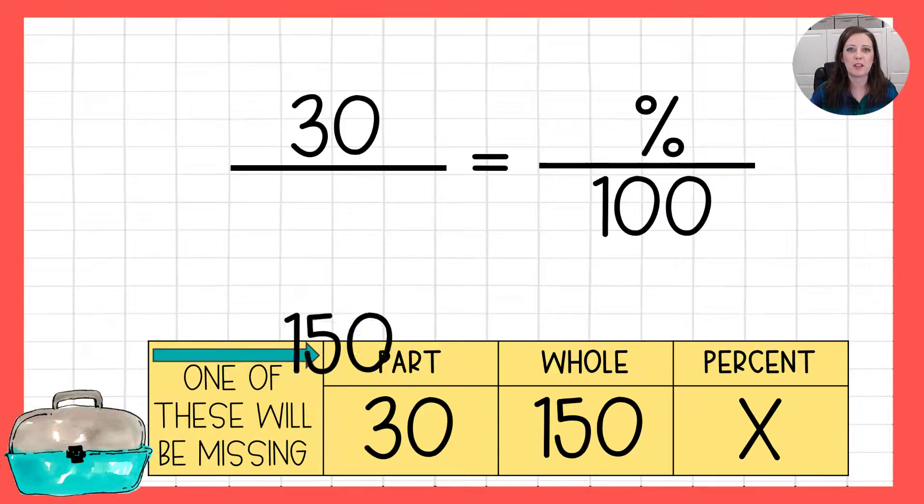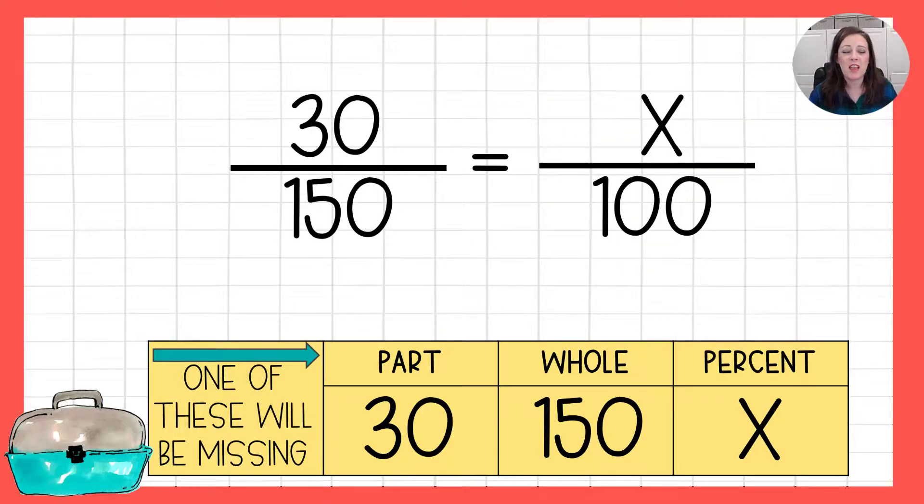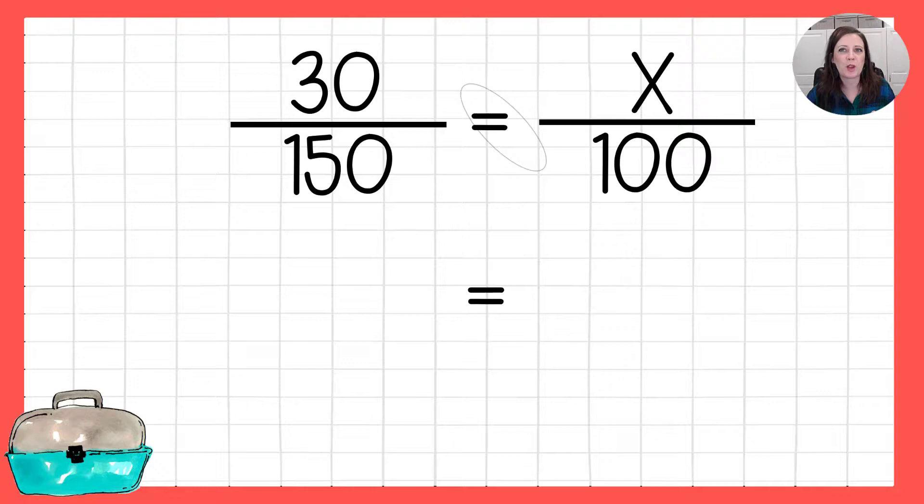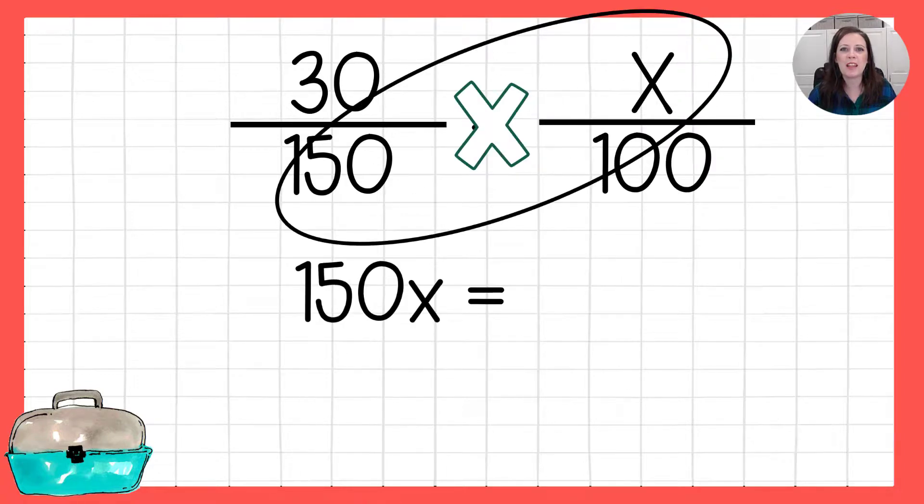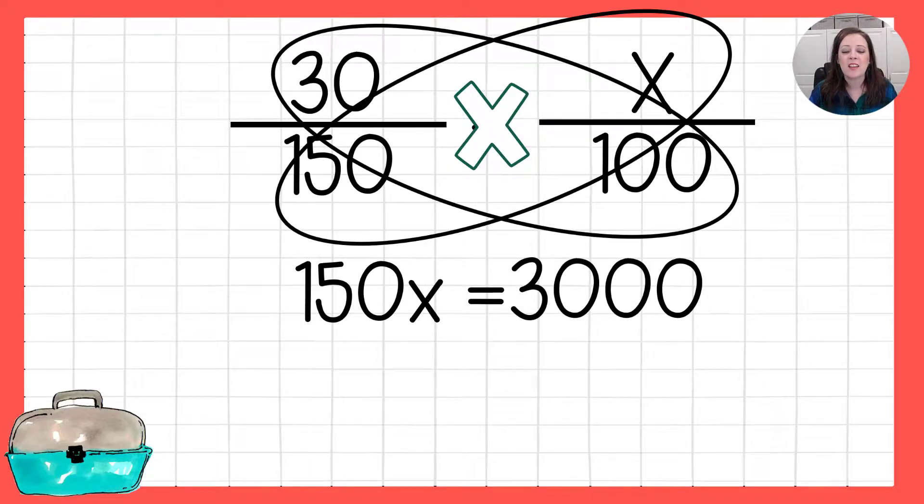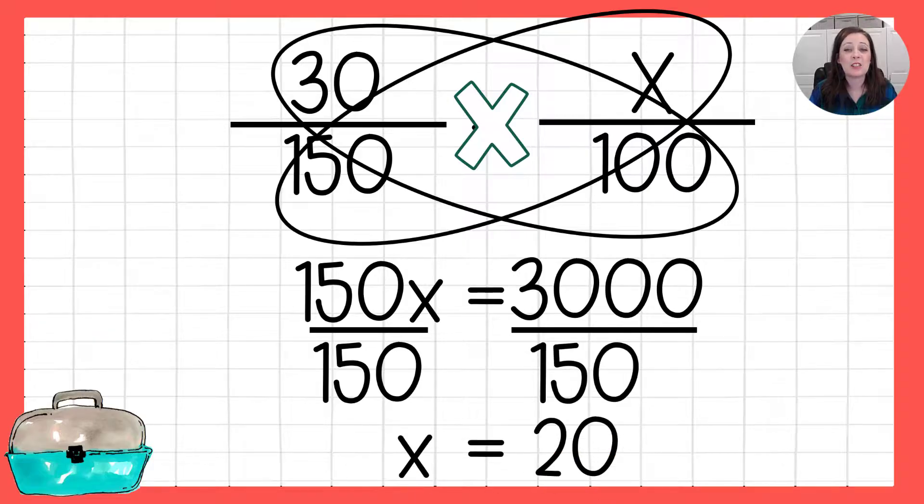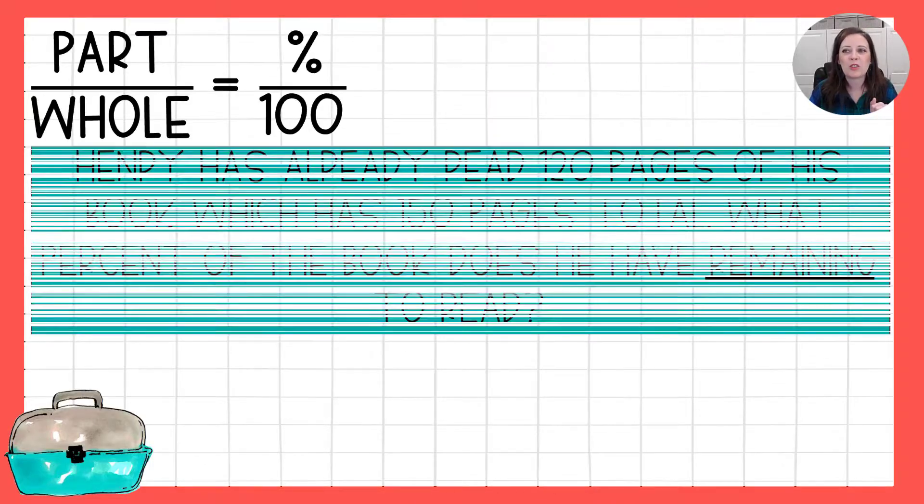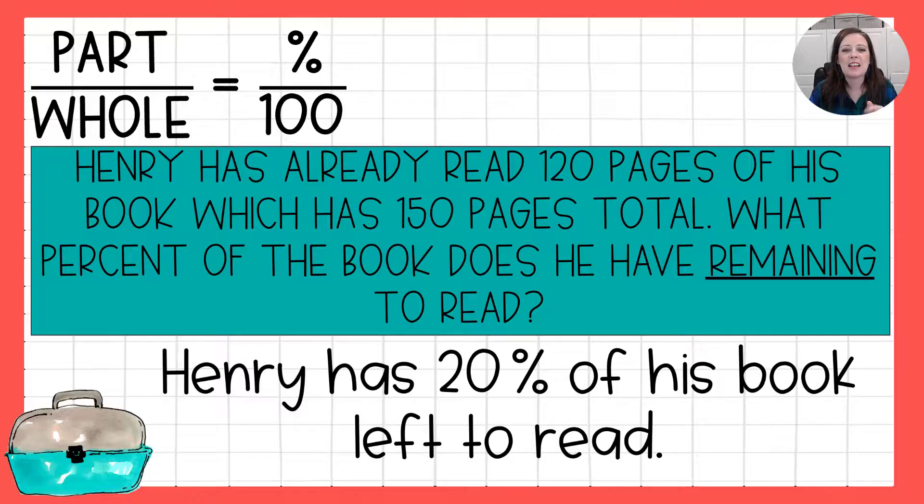So we're going to do that beautiful cross multiplying again. 150 times x is 150x. 30 times 100 is 3,000. Dividing both sides by 150 tells us that x is 20. Back to my storyline, he has 20% of his book left to read.